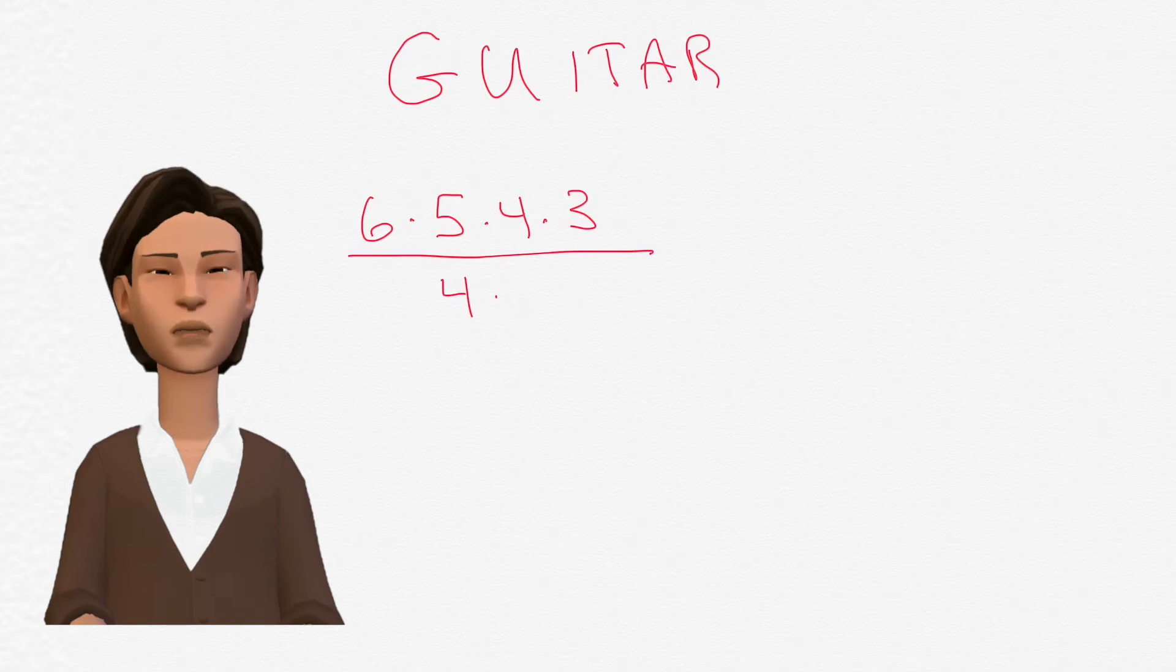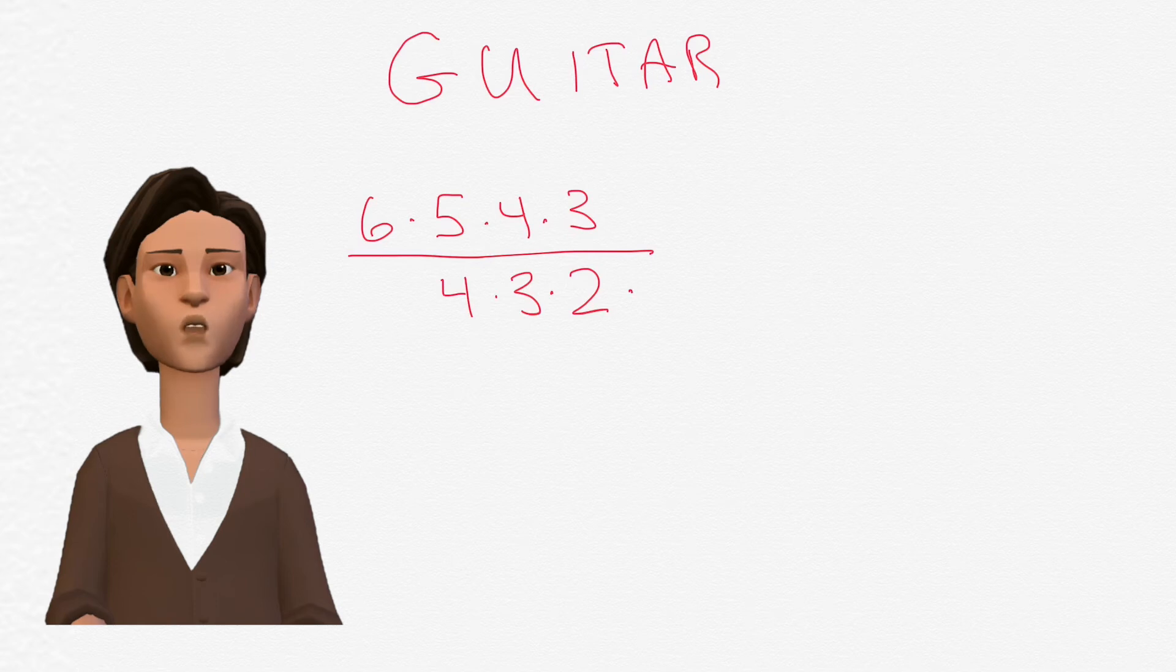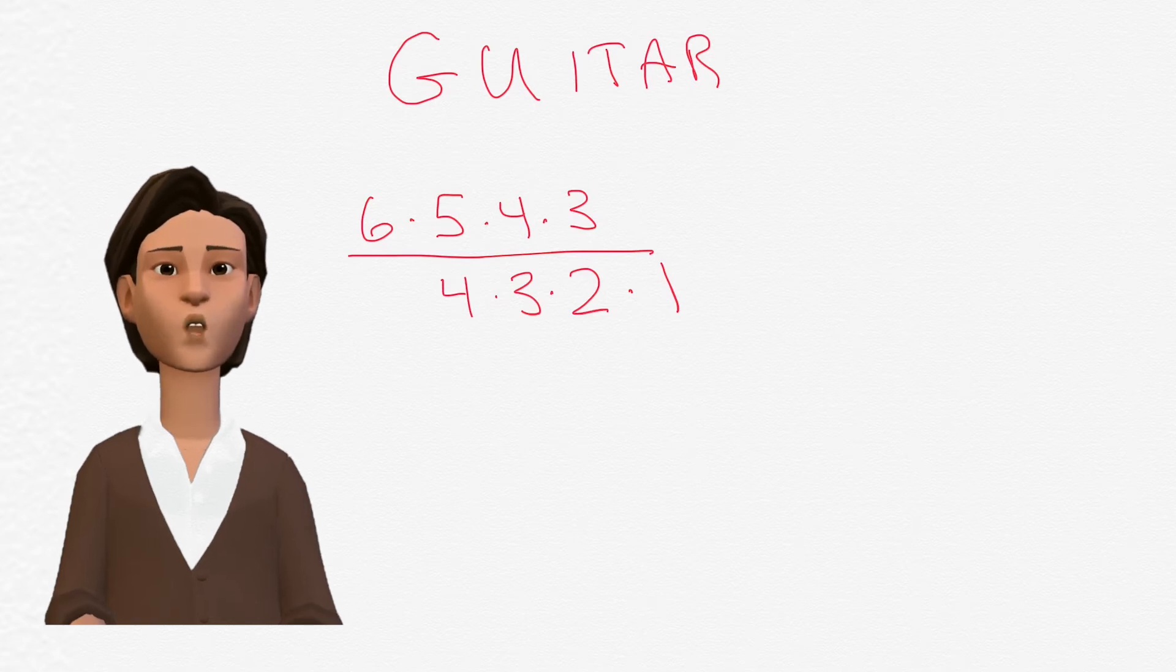Then, there are three possibilities for the second slot, followed by two possibilities for the third slot, and then one possibility for the last slot. So for the denominator, you would multiply four times three times two times one.